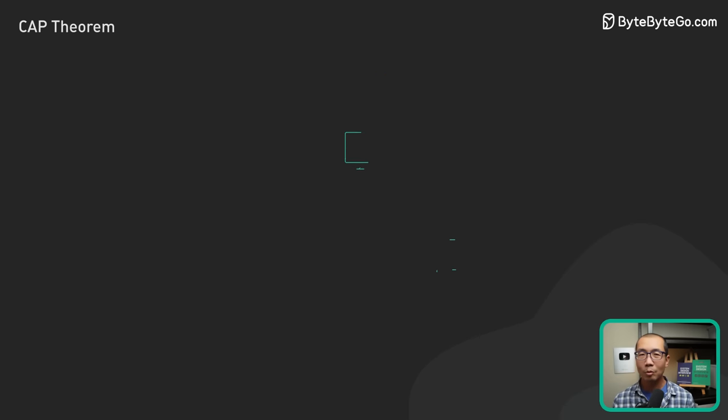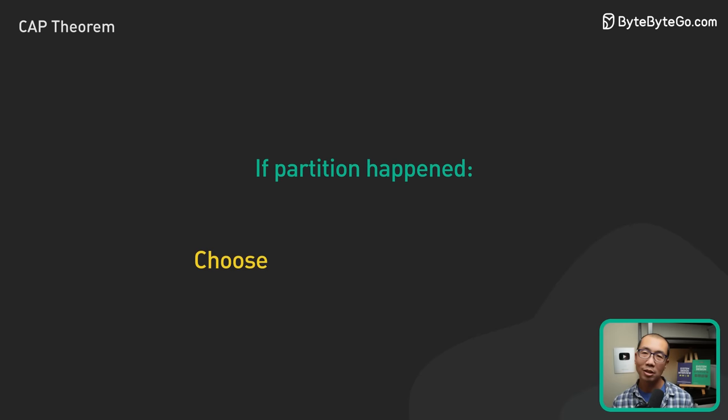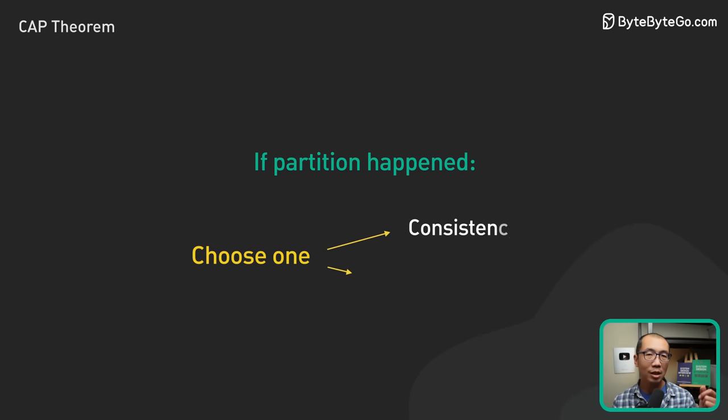But what is a network partition? A network partition happens when nodes in a distributed system are unable to communicate with each other due to network failures. When there is a network partition, a system must choose between consistency and availability.